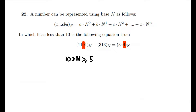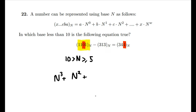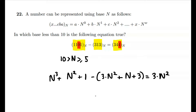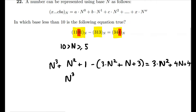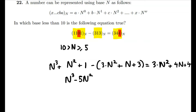The next thing we can do is write the equation in terms of n. In base n, 1101 can be written as n³ + n² + 0 + 1, which is just 1. And 313 can be written as 3n² + n + 3. And 344 can be written as 3n² + 4n + 4. Rearranging this equation gives us n³ − 5n² − 5n − 6 = 0.